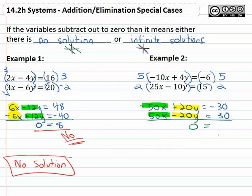On the right, negative 30 plus 30 is also zero. Again with the variable subtracting out completely, we need to ask ourselves, does this make sense? Does zero equal zero? Yes it does.